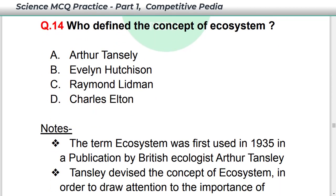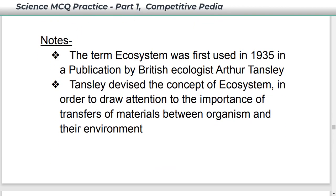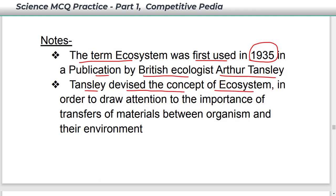Who defined the concept of ecosystem? The concept was given by Arthur Tansley — option A. The term ecosystem was first used in 1935 in a publication by British ecologist Arthur Tansley. Tansley devised the concept of ecosystem to draw attention to the importance of transfers of materials between organisms and their environment.